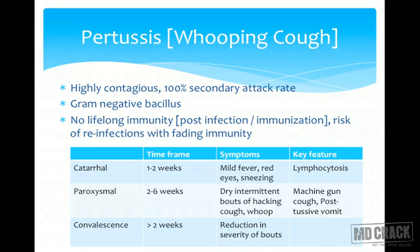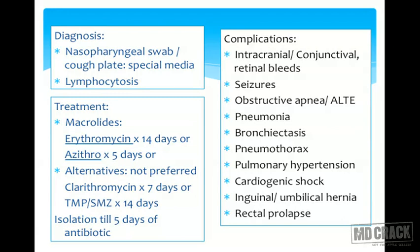Post-tussive vomiting and machine-gun cough lasting 14 days or more are characteristic features of pertussis. The convalescence phase starts after paroxysms and may last two weeks or beyond, with gradual reduction in severity. Diagnosis is based on nasopharyngeal swab or cough plate — the agar medium is placed in front of the mouth while the child coughs. Lymphocytosis is a key finding, ranging from 15,000 to 100,000, making pertussis a common cause of very high lymphocyte counts.